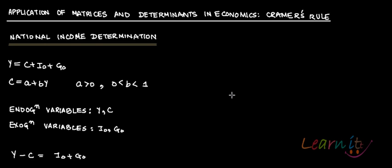In our earlier recording we saw a very simple application of Cramer's rule. Now here we will try to apply Cramer's rule in economics. This is a very simple national income determination model: Y = C + I₀ + G₀, where C is consumption, I is investment, and G is government. The subscript 0 with I and G indicates that these are exogenous variables — given from outside and not determined within the system.